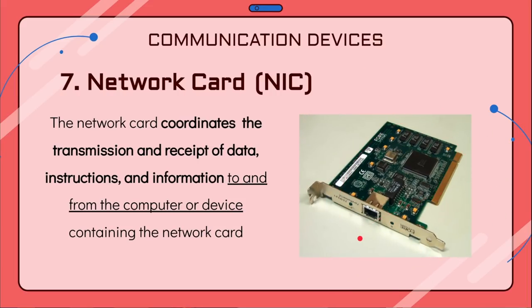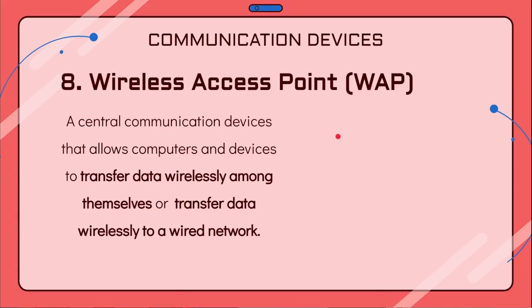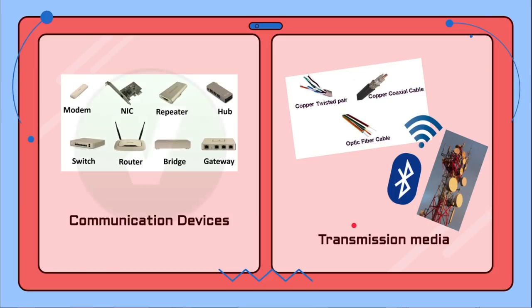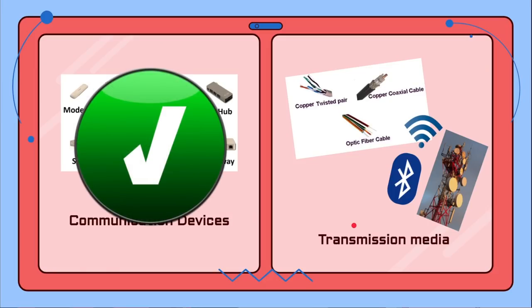Then we have a wireless access point, or WAP (W-A-P). It is a central communication device that allows computers and devices to transfer data wirelessly among themselves or to a wired network using wireless technologies such as Wi-Fi. That concludes our look at communication devices.